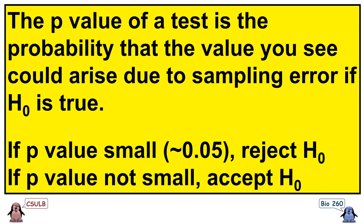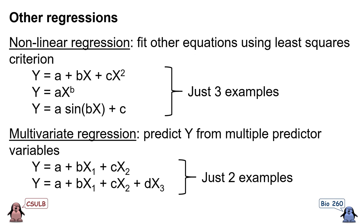Let's begin our tour of other statistical techniques by looking at other kinds of regressions. In this course, we learned about linear regression — putting a straight line through data — but there are other kinds. There are nonlinear regressions where we fit other equations to the data, still using the least squares criterion. For example, we could fit a polynomial, an exponential, or trigonometric function to our data, and then use the least squares criteria to figure out what the best values of those a, b, and c coefficients are.